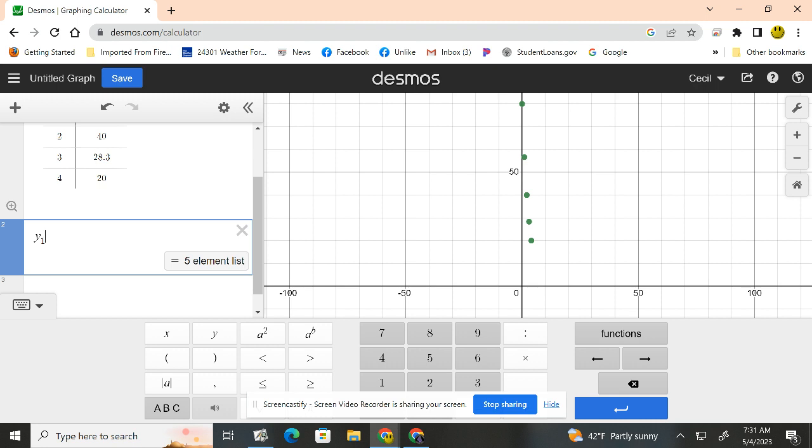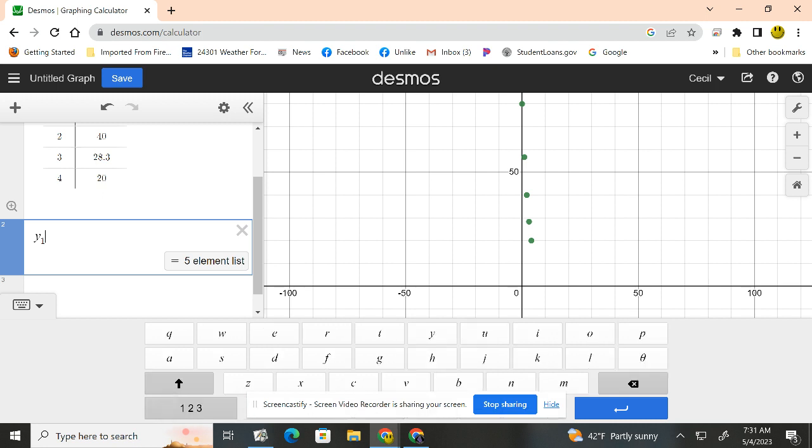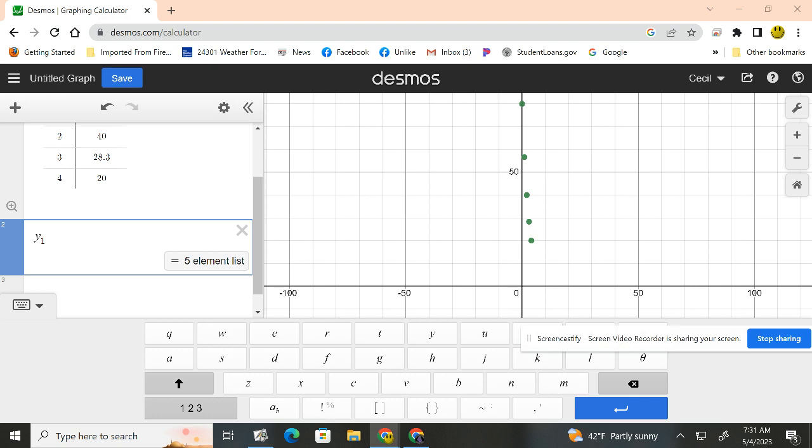So I then just type 1. It'll automatically put the 1 down there. I now need a little squiggly fella. So you can get it on your keyboard, or if you just hit the ABC, it is right here, right there. It's a little squiggly.